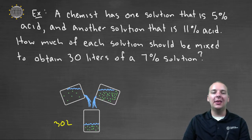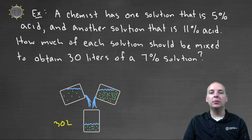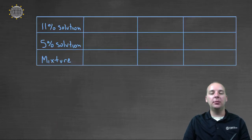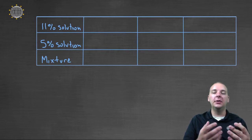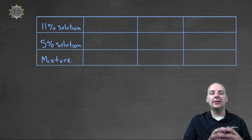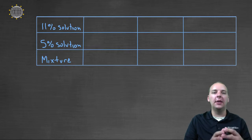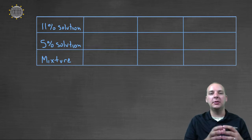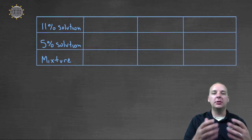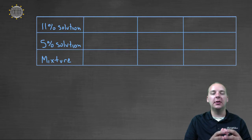One thing that really helps when you work these mixture problems is a table. You really need a table to help visualize how much acid is coming from the eleven percent solution, or the five percent solution, or is in the mixture.